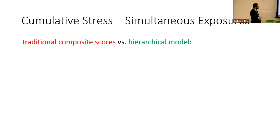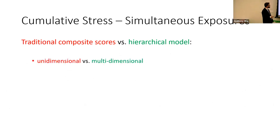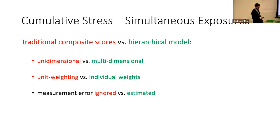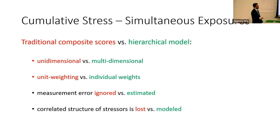Compared to traditional composite scores, the hierarchical model formally accounts for the multidimensional nature of cumulative stress rather than assuming unidimensionality. Instead of unit weighting, we have individual weights from the hierarchical model. Measurement error is formally estimated rather than ignored. And the correlated structure of stressors is not lost but actually formally modeled. These are the primary advantages of adopting a hierarchical modeling approach to operationalizing cumulative stress.